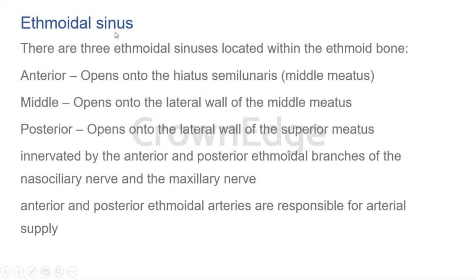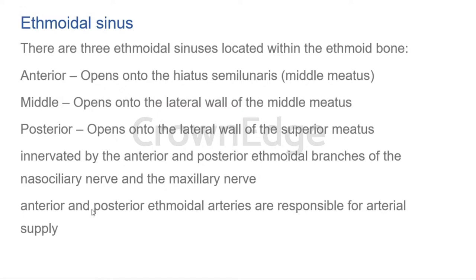The ethmoidal air sinuses are three in number — anterior, middle, and posterior groups — each as a pair, making approximately six to nine sinuses in total, all located within the ethmoid bone. The ethmoid bone is very light because of the presence of all these sinuses. They are innervated by anterior and posterior ethmoidal branches of the nasociliary nerve and maxillary nerve, with blood supply from anterior and posterior ethmoidal vessels.